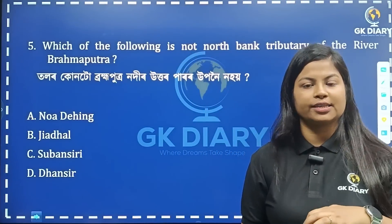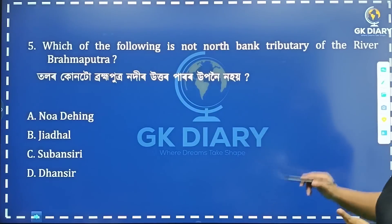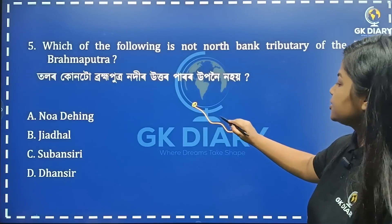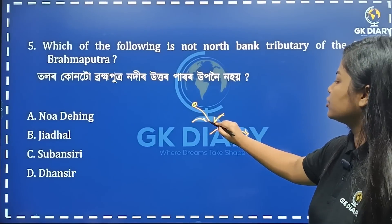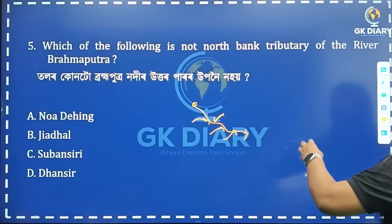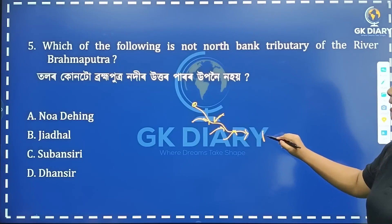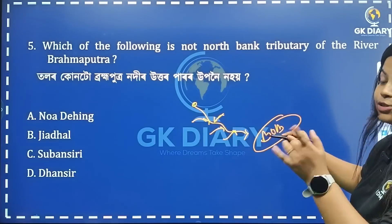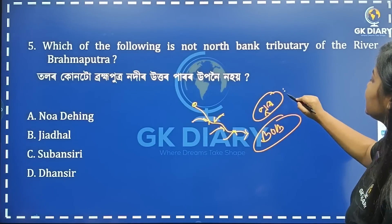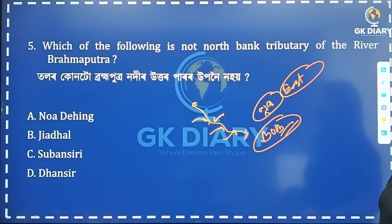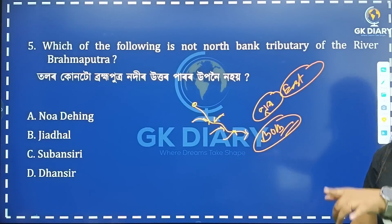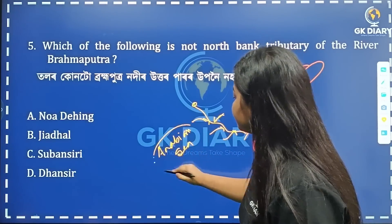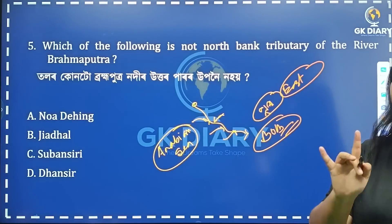Next question: which of the following is not a north bank tributary of the river Brahmaputra? Tributaries that flow from the north bank drain into the Brahmaputra. If a river flows east and drains into the Bay of Bengal, or flows west toward the Arabian Sea, it would not be a north bank tributary of Brahmaputra.